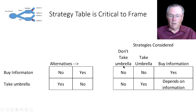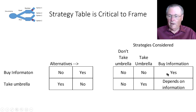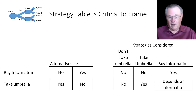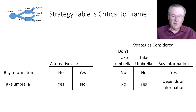So here are the strategies we're going to evaluate: we don't take an umbrella and we don't get information; we don't get information but we take the umbrella; or we buy information, and then what we do will depend upon the outcome of that information. Obviously if the forecaster says it's going to rain, we're going to take or buy an umbrella, and if it says it's not going to rain, we're not going to do that.